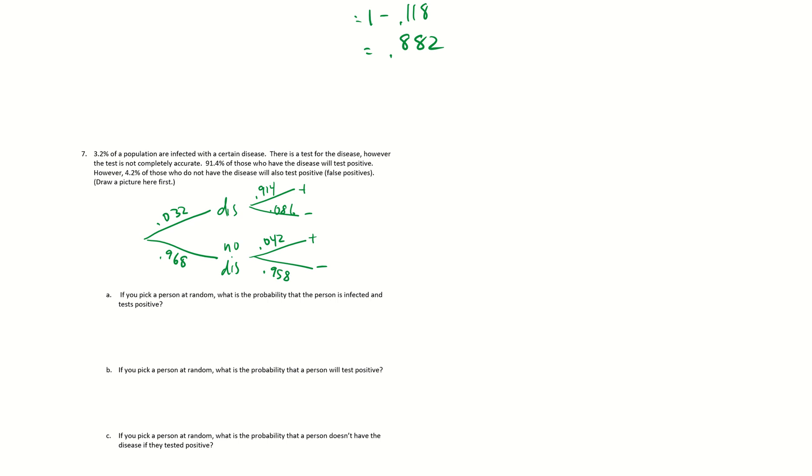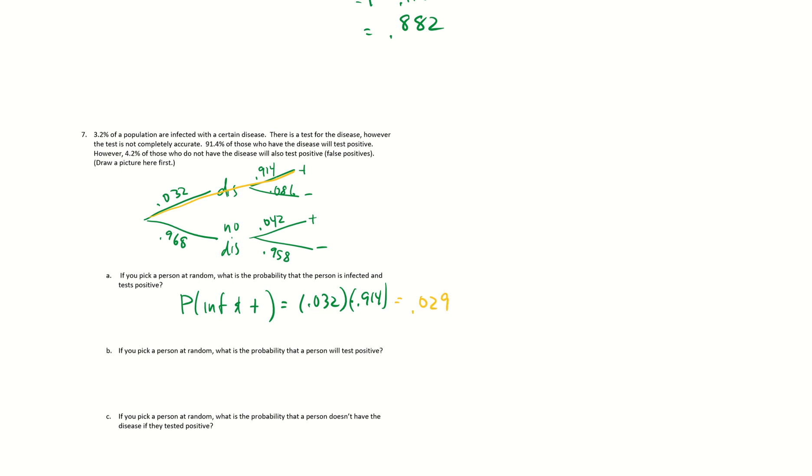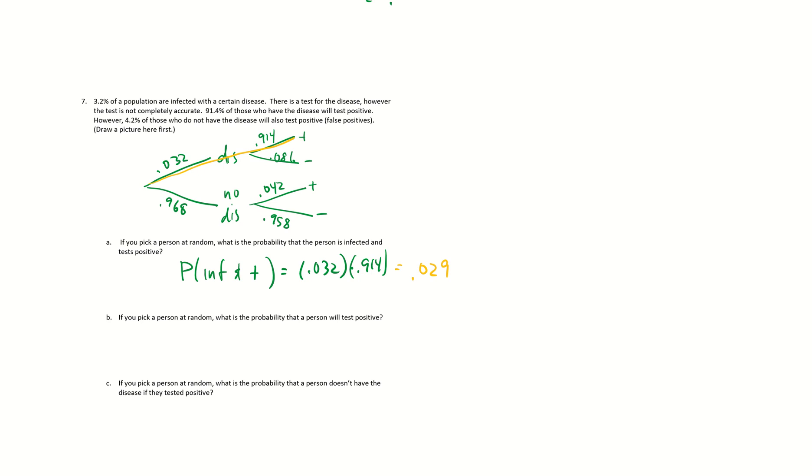So if I pick a person at random, it's probably they're infected and tested positive. We'll have the disease, so that would be 0.032 times 0.914. Because if they're infected, they have disease and test positive, it's this and that. And you get 0.029. What's probably a person tests positive? Well, that's here or here. So that's out here or this branch. So probability of test positive will be 0.032 times 0.914 plus 0.968 times 0.042. And if you do that, you get 0.069904 or if you round it, you could say 0.07.